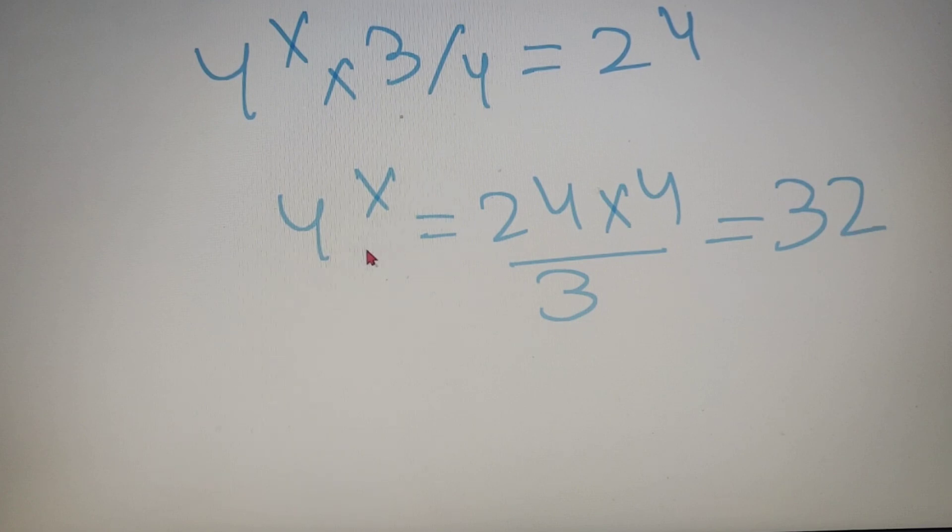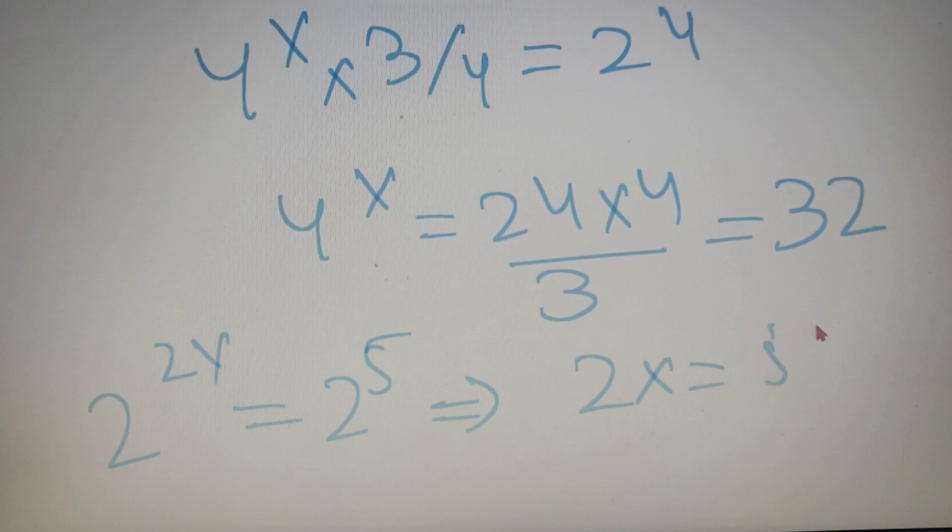Now I can write 4 to the power x as 2 whole to the power 2x and 32 as 2 to the power 5. That implies 2x is equal to 5. Now I can say this because the bases are same so their powers must be equal. So 2x is equal to 5 which implies x is equal to 5 by 2.